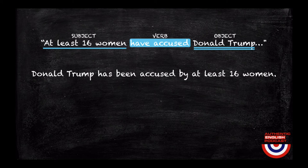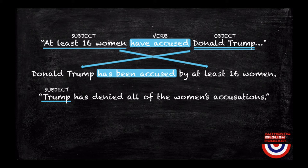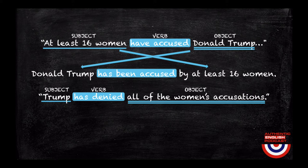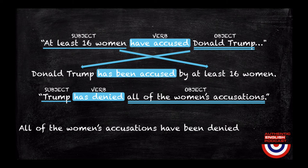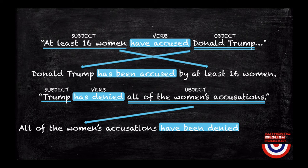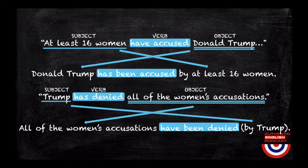Example number two: 'Trump has denied all of the women's accusations.' 'Trump' is the subject, 'has denied' are the verbs, and 'all of the women's accusations' is the object. Let's suppose we want to shift the focus from Trump to the accusations. The sentence would then be: 'All of the women's accusations have been denied.' Note that the focus is now all of the women's accusations. Not always do we need to specify by whom; however, if you wish to specify, you would say 'by Trump.' Both sentences are in the passive voice — specifically, the present perfect passive. The structure is: have or has, plus been, plus the past participle.